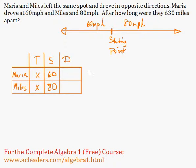And now distance. That's an interesting one here. We know that time times speed equals distance. So the distance for Maria is just 60x, because 60 times x, speed times time equals distance. Miles, of course, just 80 times x, so 80x.